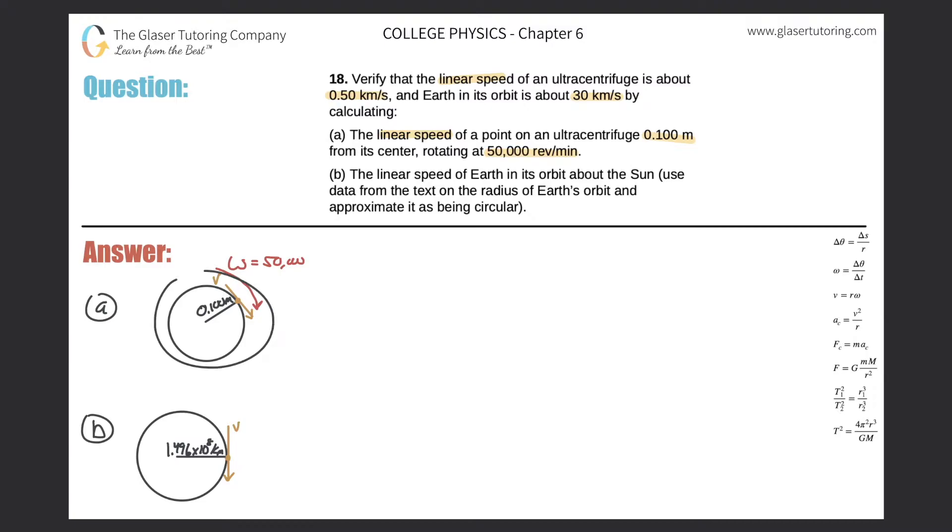So here is our ultracentrifuge. Here's a point on the ultracentrifuge's orbit. The orbit is circular. They told us the radius is 0.1 meters and they gave us the value of 50,000 revolutions per minute. So this is revolutions per minute, and also note that these units denote that it is an angular speed.